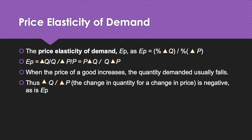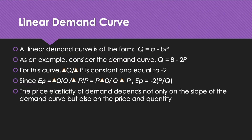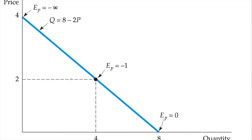When the price of a good increases, the quantity demanded usually falls as explained in the theory of demand. This means ΔQ/ΔP — the change in quantity demanded for a change in price — is negative, and hence the price elasticity of demand is usually negative. Consider the linear demand curve of the form Q = A − BP. As an example, consider the demand curve Q = A − 2P.